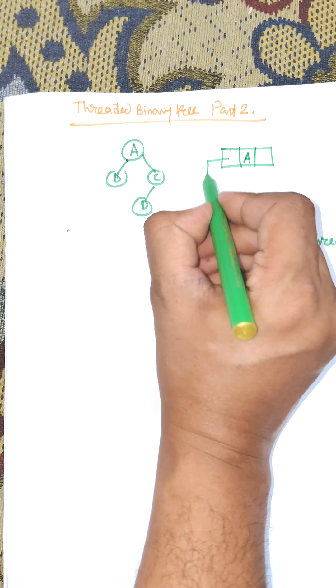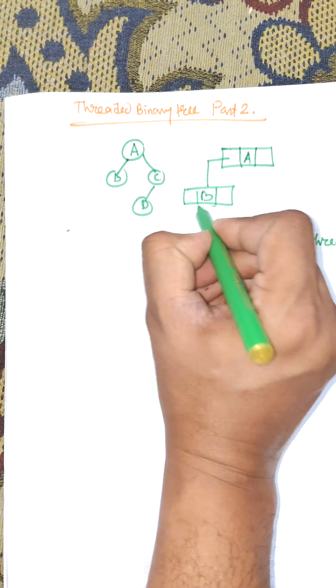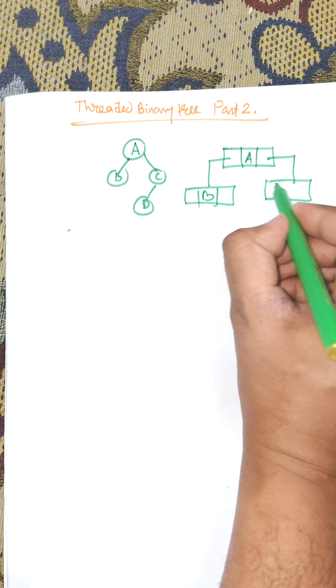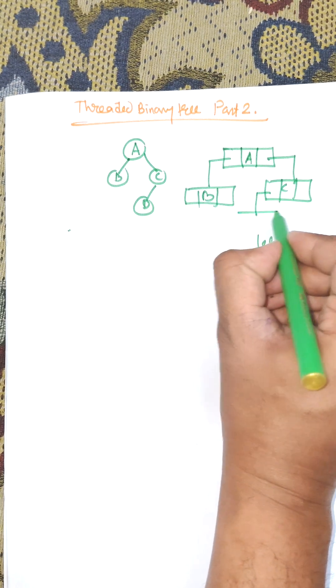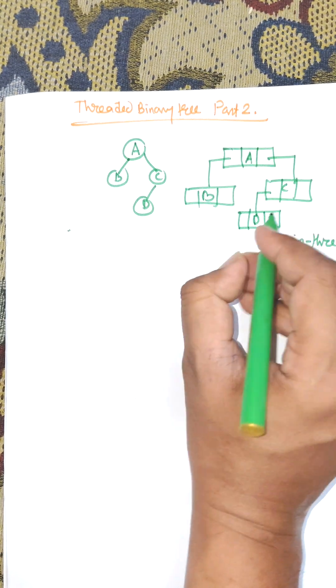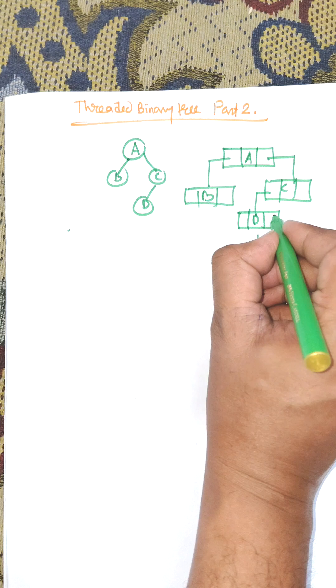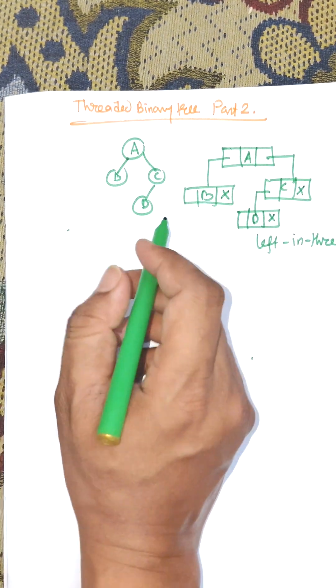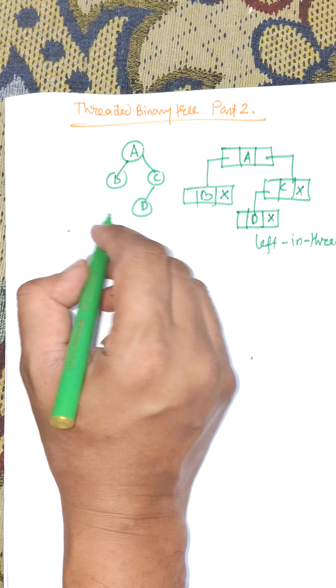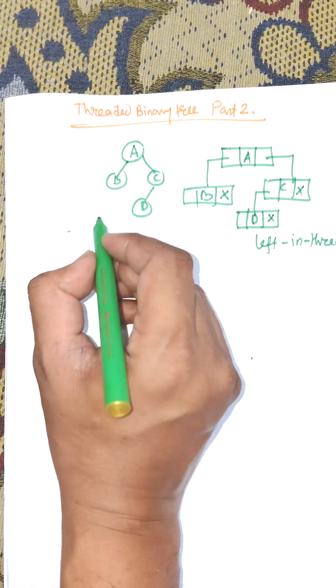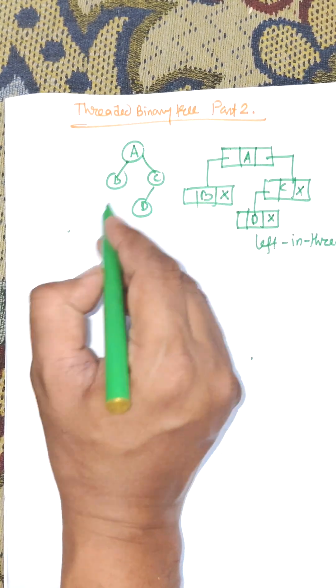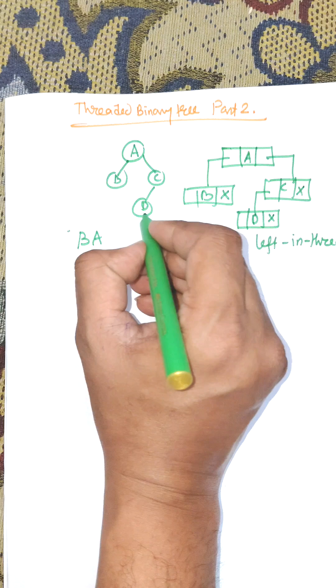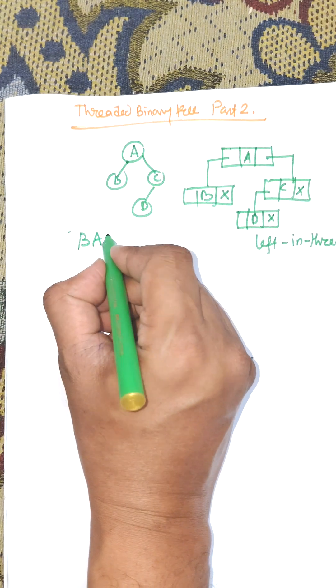Consider a tree with nodes A, B, C, and D. To use the left pointer, we first need to create the inorder traversal of this tree. Inorder means left, root, right: B, A, D, C.